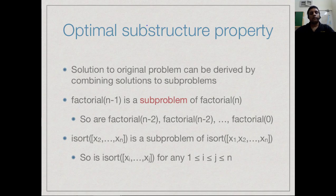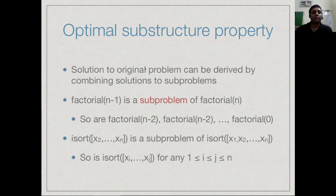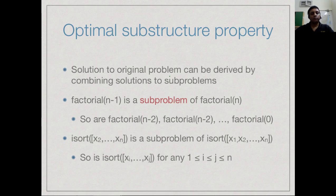What such inductive definitions exploit is what is sometimes called the optimal substructure property. What this means is that you solve the original problem by combining solutions to sub-problems. The solutions to the original problem are derived in terms of solutions to sub-problems, and if the sub-problem is the same type then it is computing the same type of answer. In numerical problems like factorial it does not make sense to say something is optimal, but for insertion sort the result of sorting the sub-list is exactly what you want.